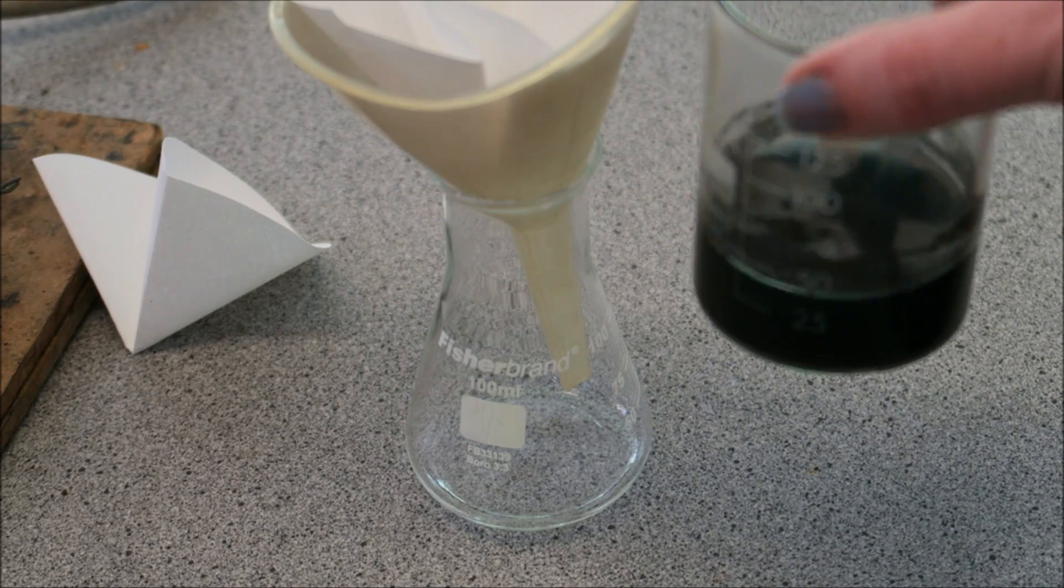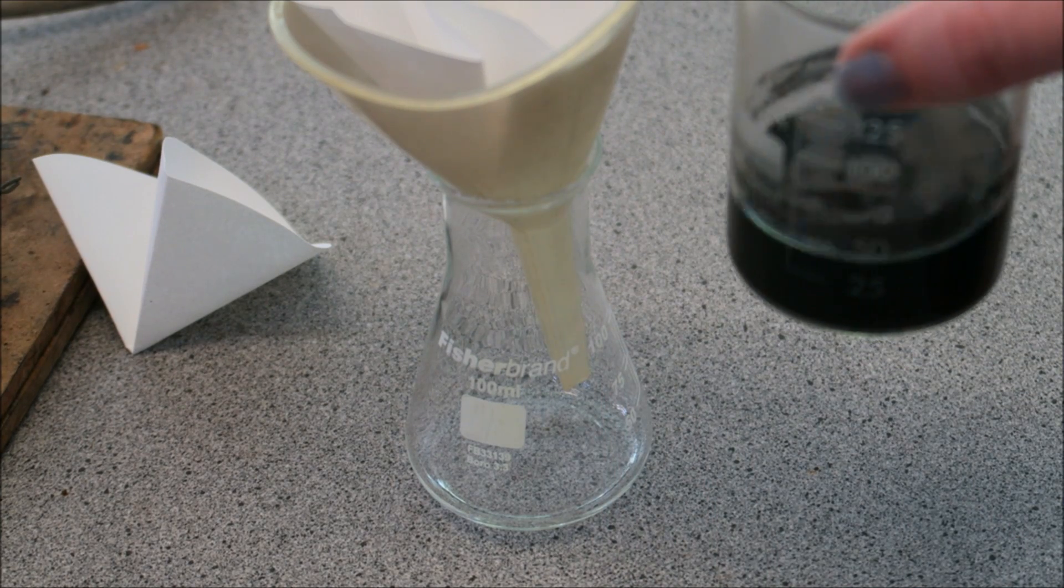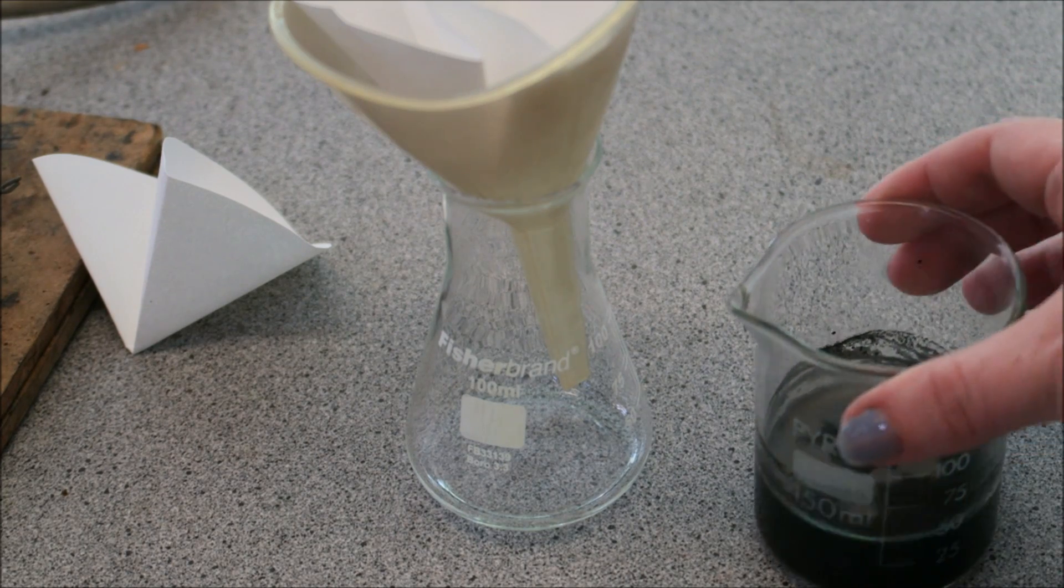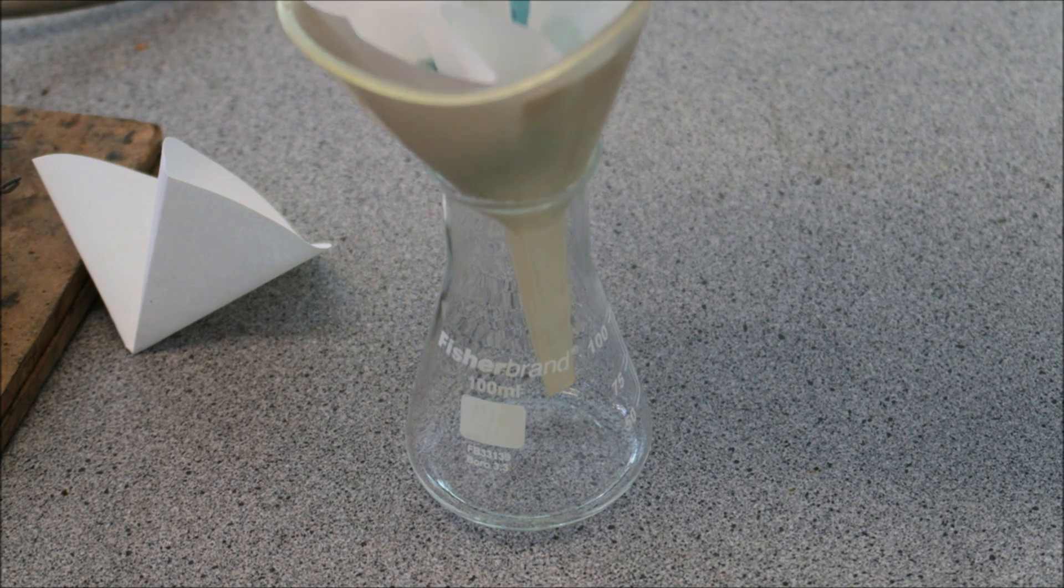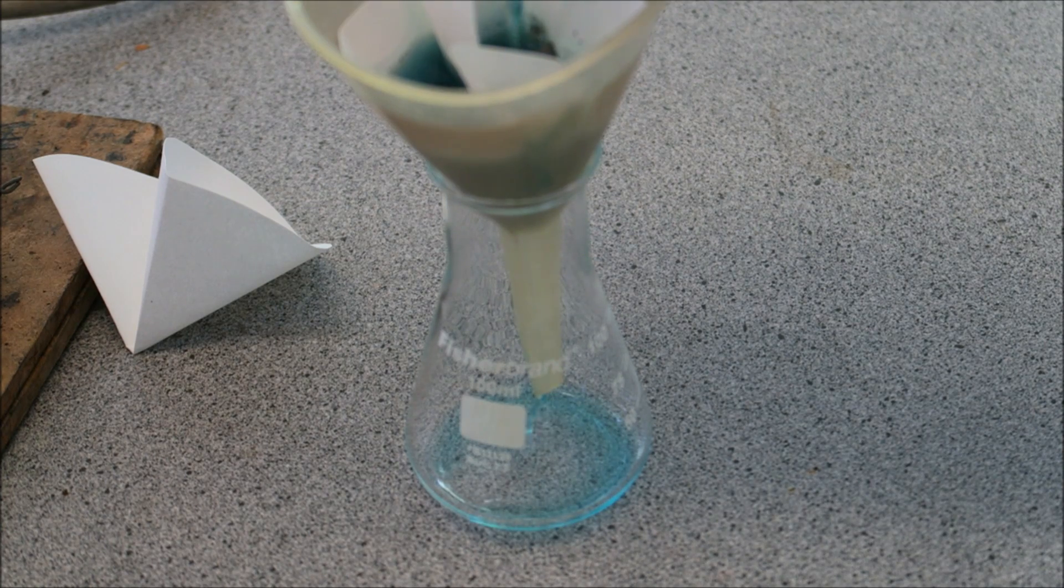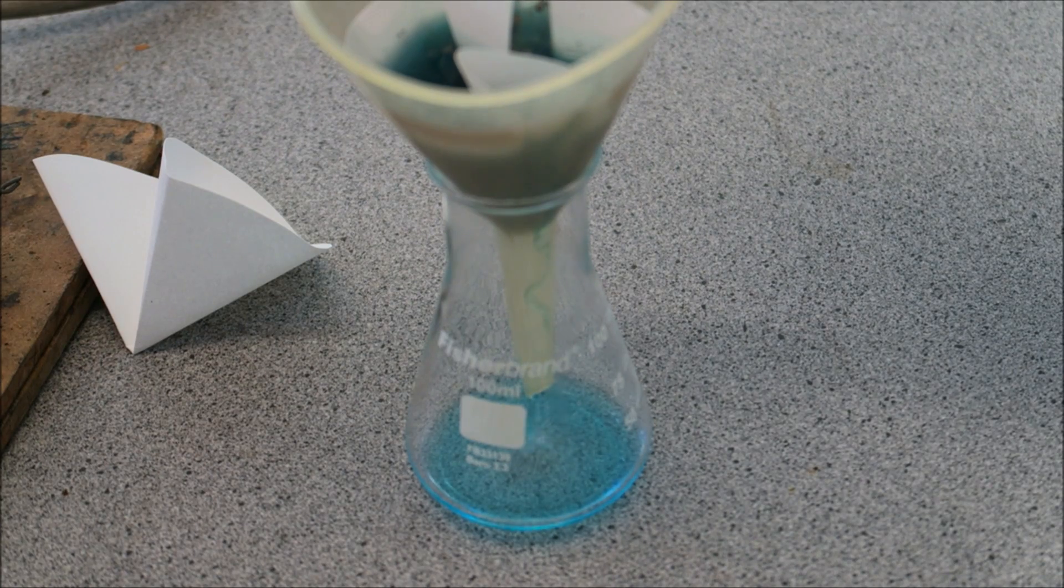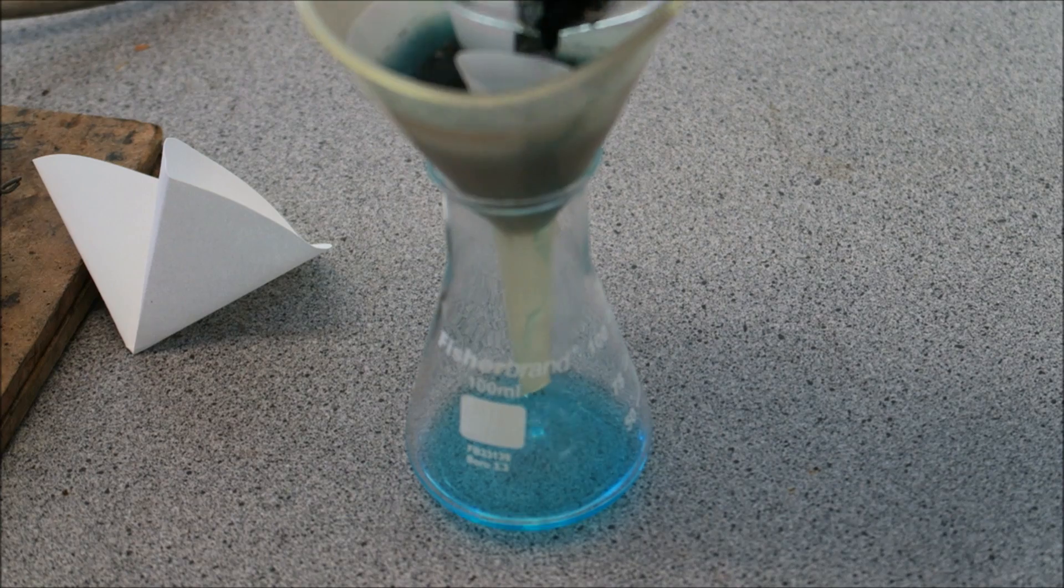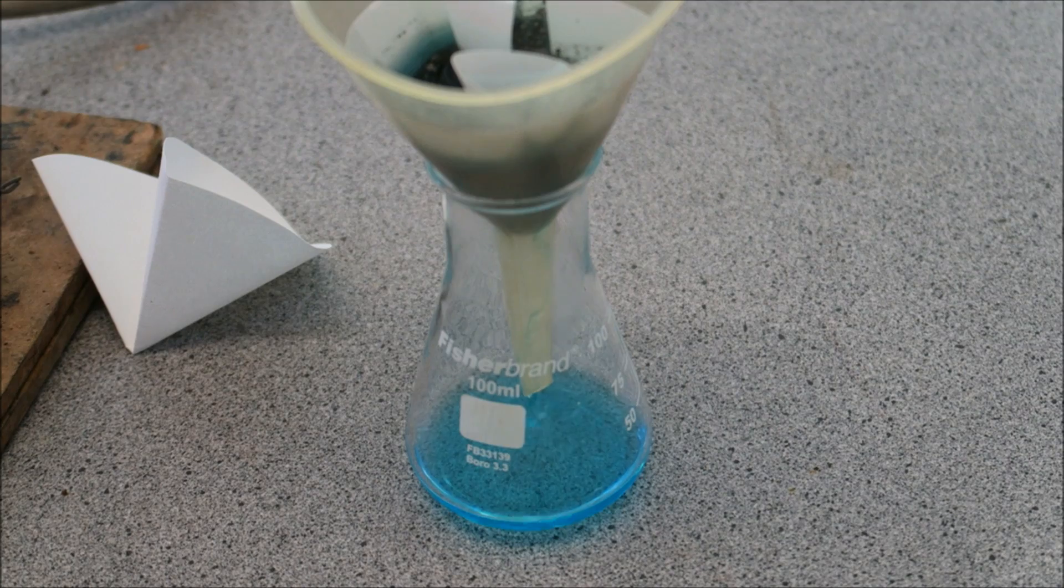So now I'm going to pour my mixture here through the filter funnel to separate out the solid from the liquid. You need to be really careful when you do this. Do this slowly because it is hot and you just don't want everything to spill over the edge. Now watch really carefully for the color that is coming through at the bottom. Remember we mixed black powder with clear sulfuric acid. And I really like this experiment because it comes out with such a lovely surprise when the solution at the bottom comes out blue.